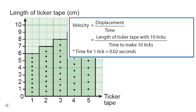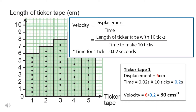For example, the displacement of ticker tape 1 is 6 cm. The time taken is 10 multiplied by 0.02, that's 0.2 seconds. Hence, the velocity of ticker tape 1 is 6 divided by 0.2. The velocity is 30 cm per second. Using this example, can you calculate the rest of the ticker tapes?